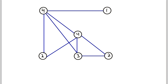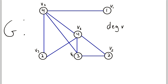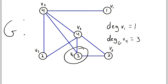Now that we've got the degrees of these vertices filled out, let's talk about a little notation. Let's go through and label these vertices — I'm going to call this vertex v1, this vertex v2, and so on. Let's call this graph G. Then we denote the degree of a vertex as deg of the vertex. So here we've got the degree of v1, and we know that equals one. We could also denote the degree of a vertex as deg with a subscript for the name of the graph, then the vertex name. So the degree of vertex v4 in graph G is three.